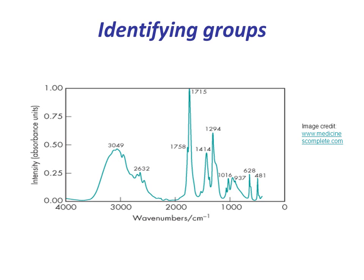Looking at our table of group frequencies, the sharp peak around 1,700 wave numbers indicates the presence of a double bond, and given the intensity, it is most likely due to the presence of a carbonyl group, which has a much stronger dipole moment than a carbon-carbon double bond.